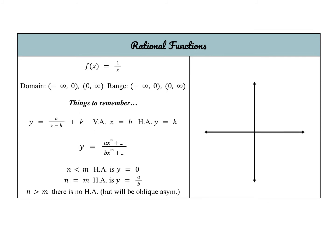Next are rational functions. The most basic parent function is 1 over x, which gives a vertical and a horizontal asymptote at x equals 0 and y equals 0, producing that hyperbolic graph. The domain is everything except 0, and the range is also everything except 0. In transformational form, the asymptotes shift to x equals h and y equals k.